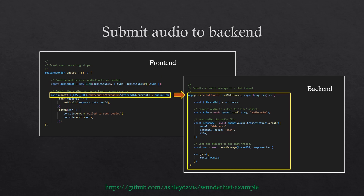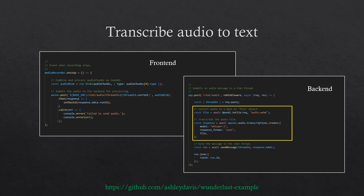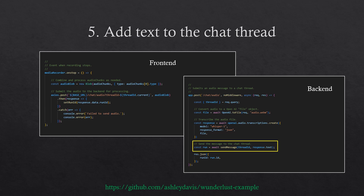With the combined audio blob, we send it to the back end via an HTTP POST request, submitting the audio to be processed. In the back end, we send the audio to OpenAI for transcription, which gives us back the text of the audio. After we've got the text, we add it to our chat message thread — we've covered this in previous videos, so we delegate that to a separate function called send message.